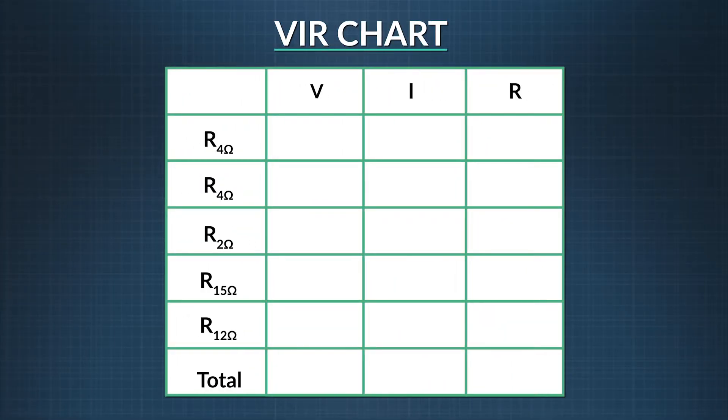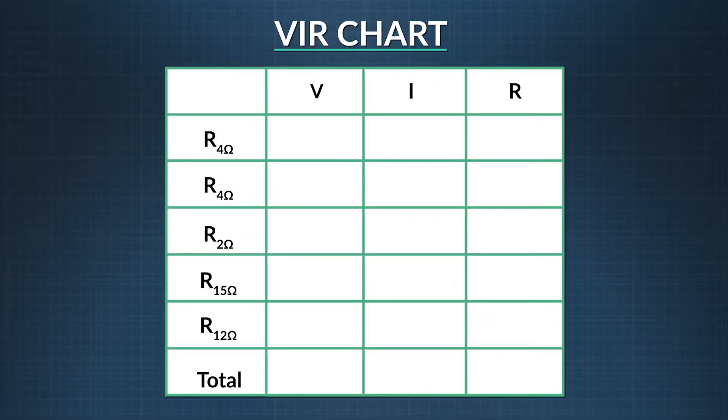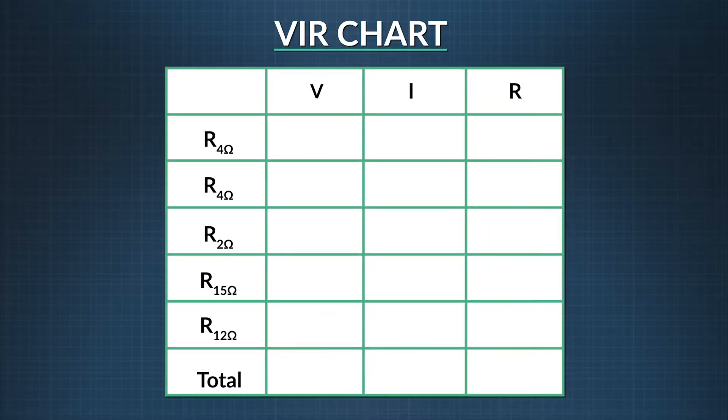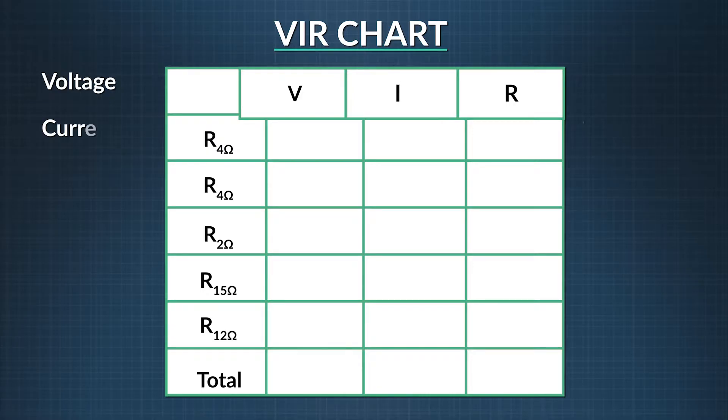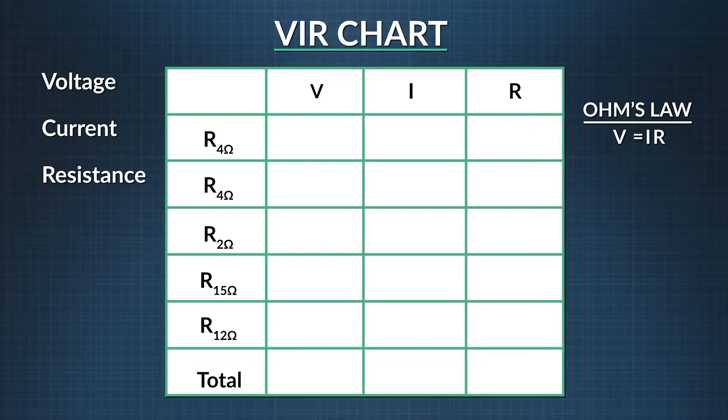This is called a VIR chart, and it shows you how voltage, current, and resistors behave in circuits. We can use the chart to figure out how much current runs through a given resistor, the voltage across that resistor, or the equivalent resistance or current for the entire circuit. The V is voltage, I is for current, and R is resistance. Ohm's Law tells us that voltage is equal to current times resistance for a given resistor. So if we know two out of three variables, we can find the third.